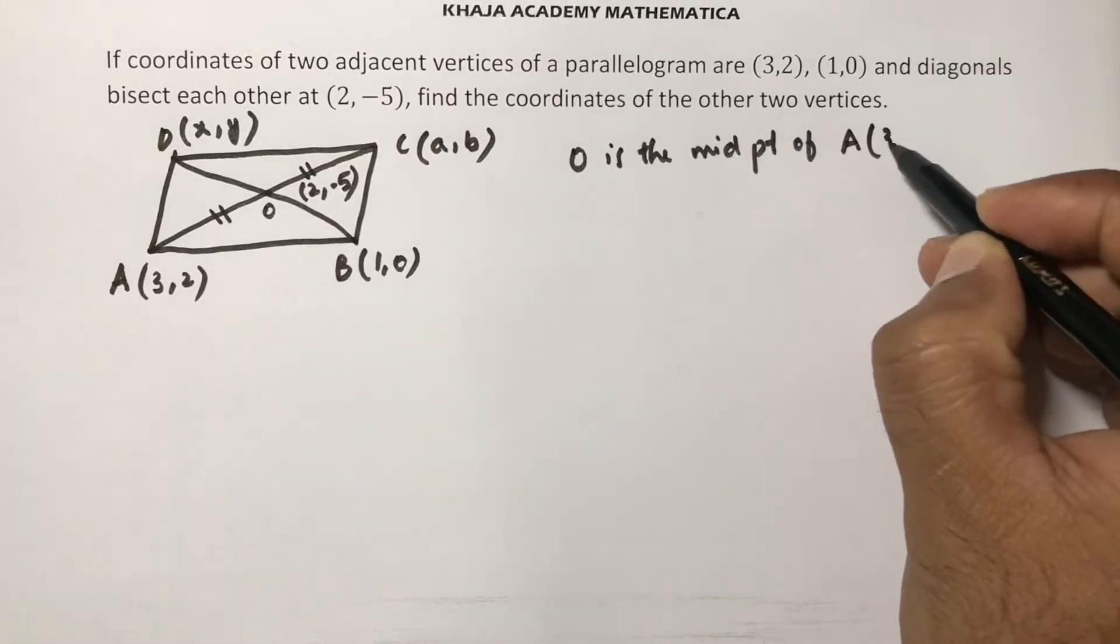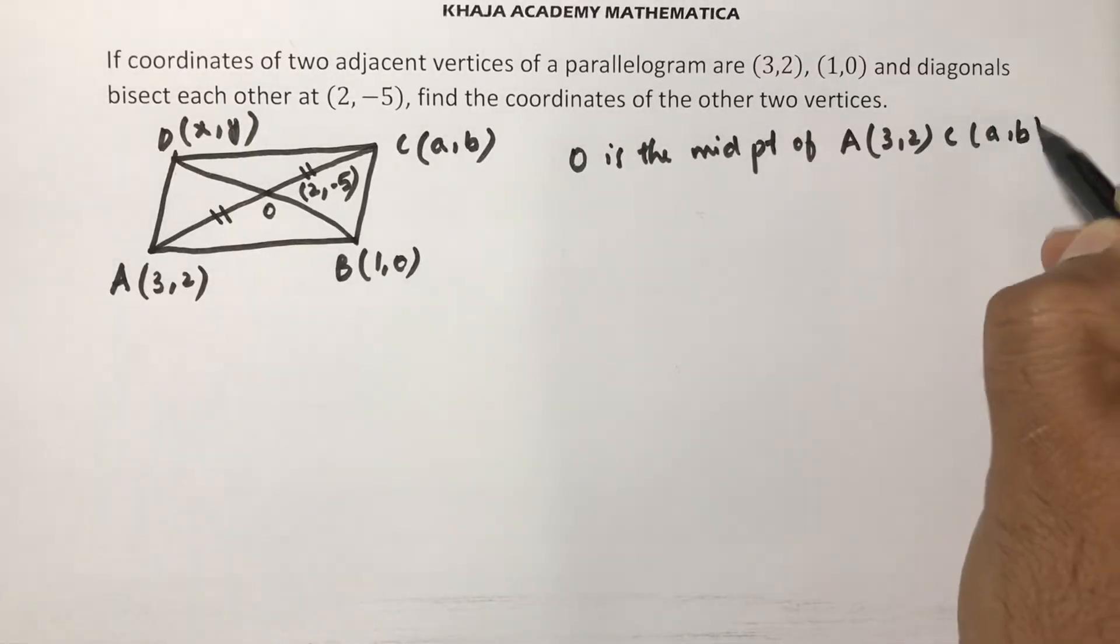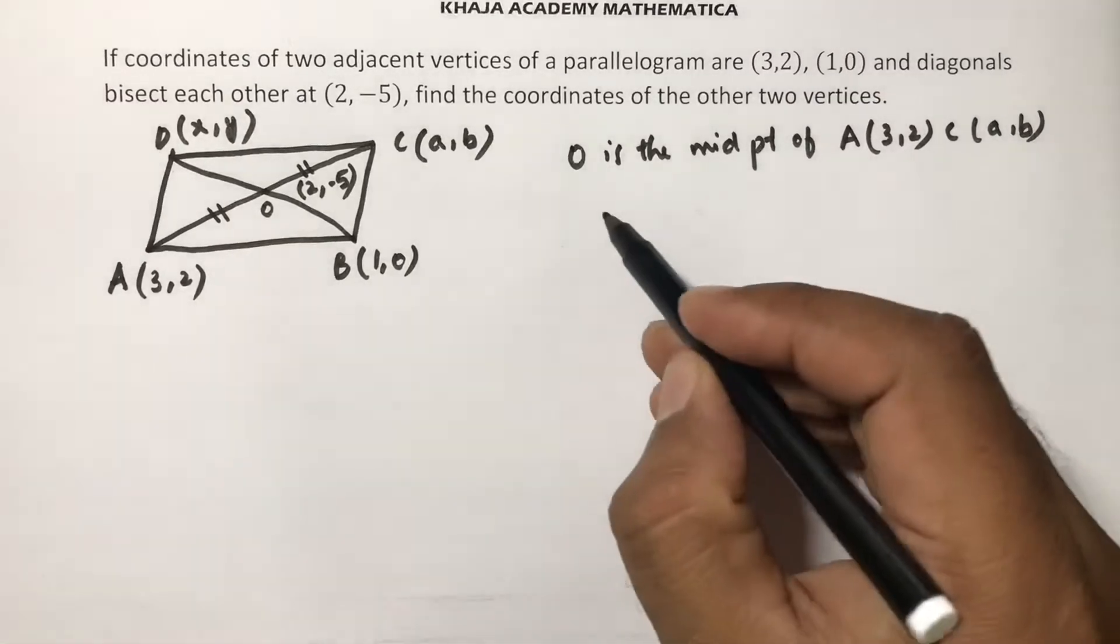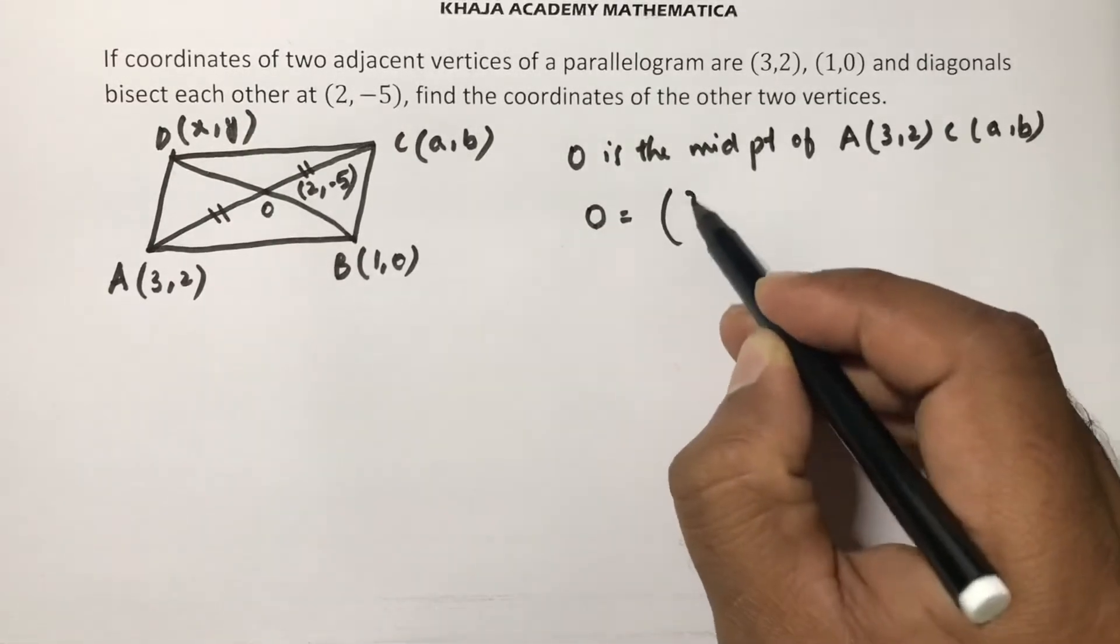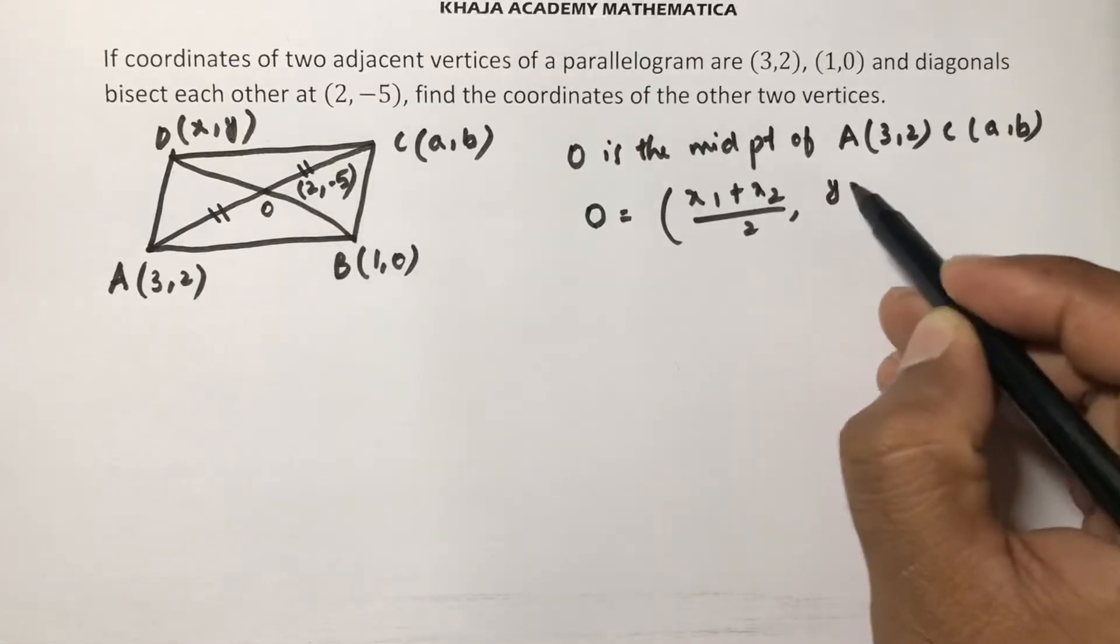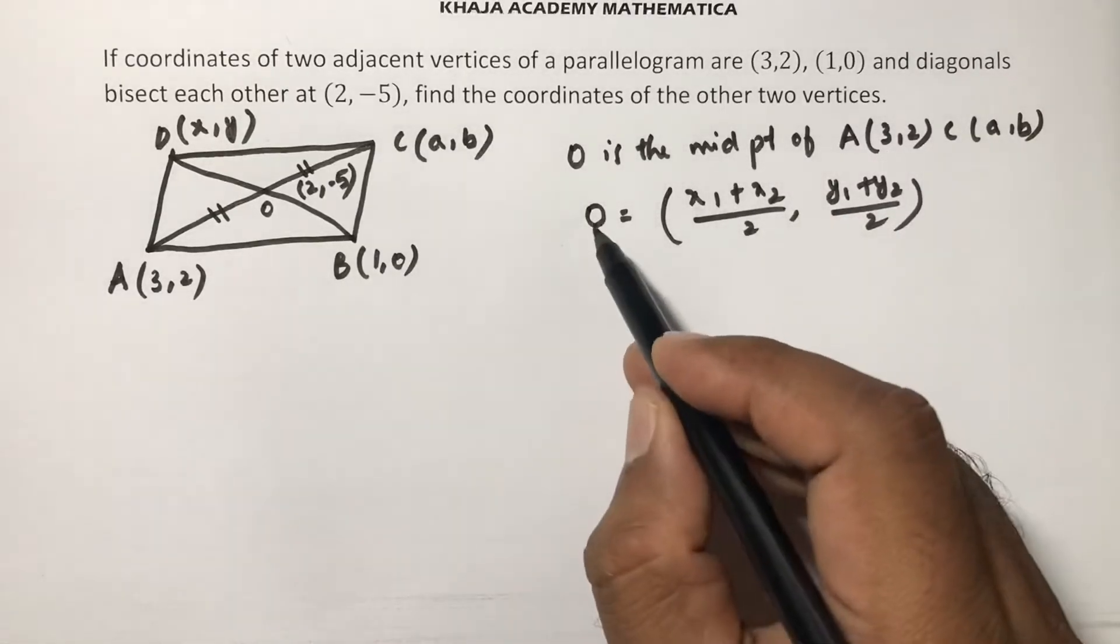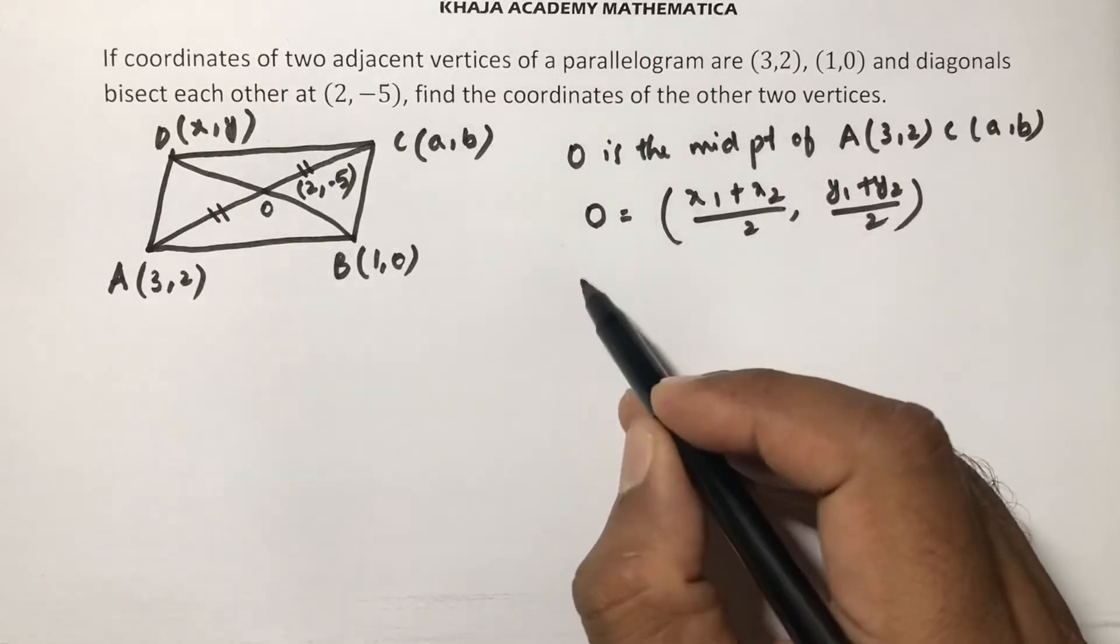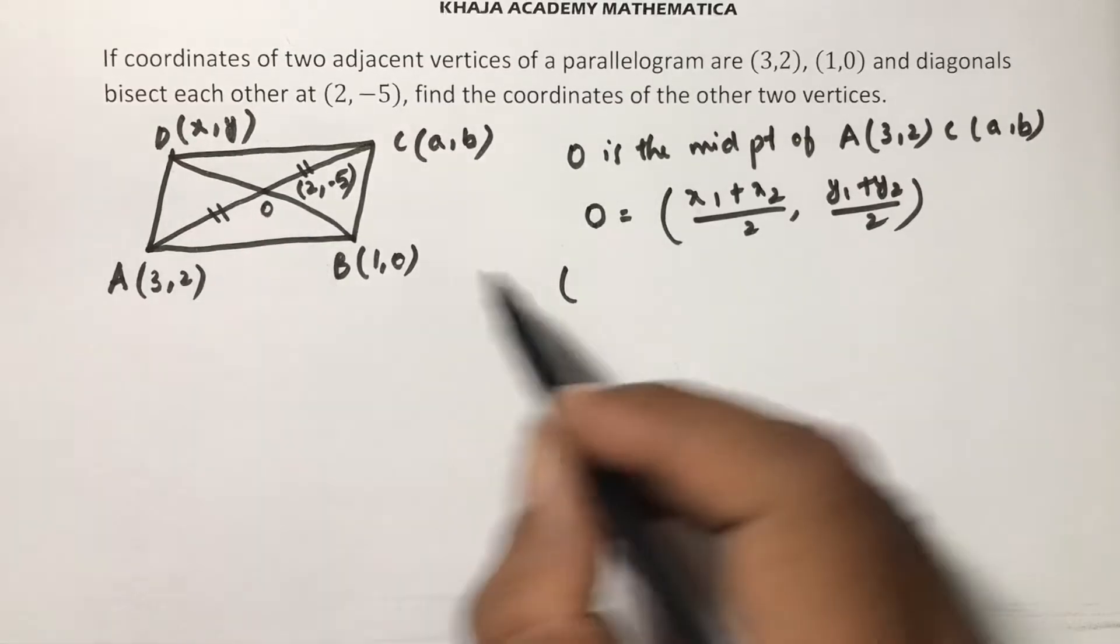Midpoint of A (3,2) and C is (a,b). So midpoint formula, O is like midpoint formula is (x₁+x₂)/2, (y₁+y₂)/2. So I am finding for AC midpoint. Diagonals bisect each other at O, I consider.